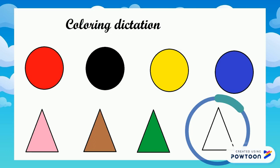Can you show me the color purple? Color triangle number 4 purple. That's right. Triangle number 4 is purple. Very good.